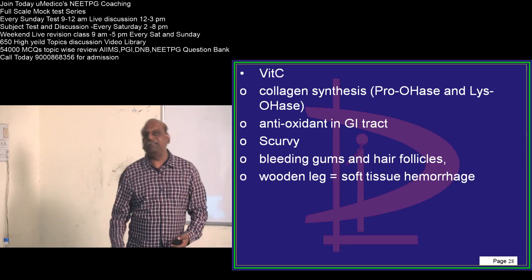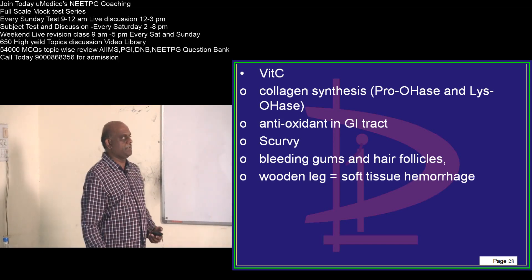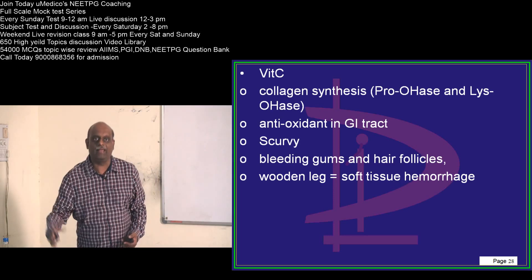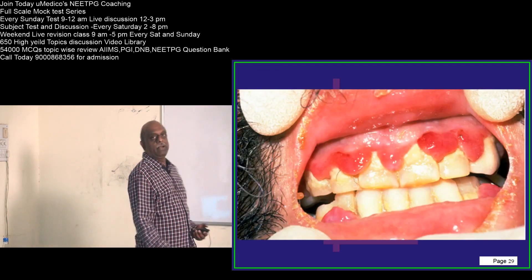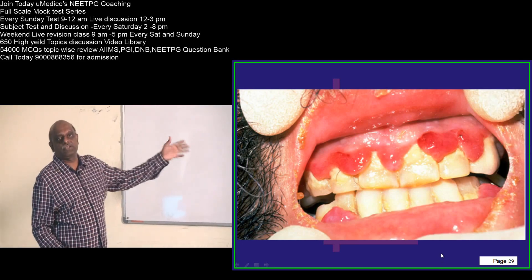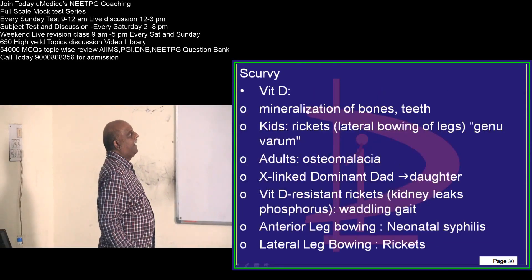And it can lead to scurvy, it can lead to bleeding gums and soft tissue hemorrhage which leads to what is called as a wooden leg, is what you have to basically remember. So this is how you typically see the lesions in the case of scurvy, is what I want to underscore to all of you.